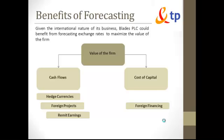Depending on the cash flow timing, we'll have to analyze the company's exposure to the volatility of the Thai baht and come up with a good forecasting strategy. We can look at different types of forecasting focused on the company's needs. The second aspect is the cost of capital — looking at potential foreign financing. Depending on how rates move or the currency risks present in a given scenario, we might find a cheaper cost of capital abroad, which will ultimately benefit the value of the firm.